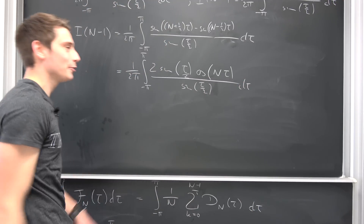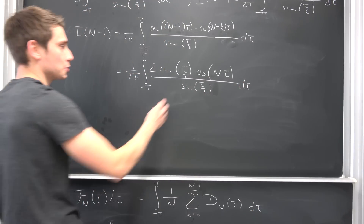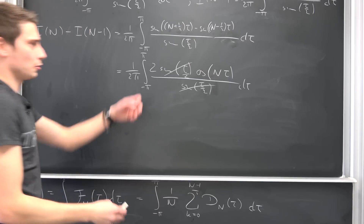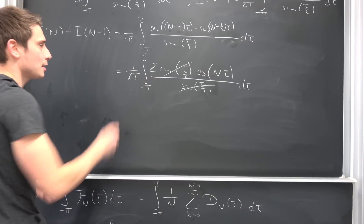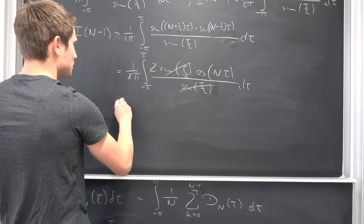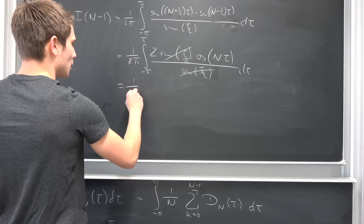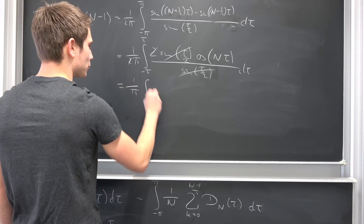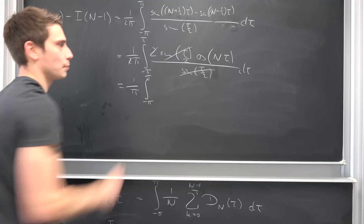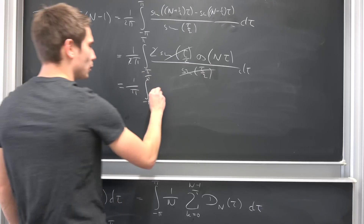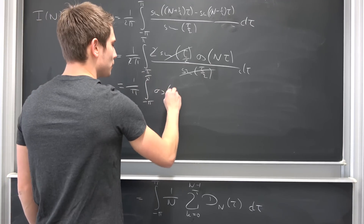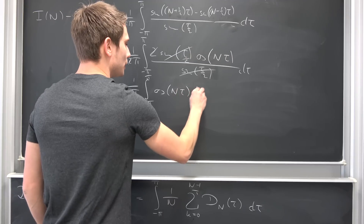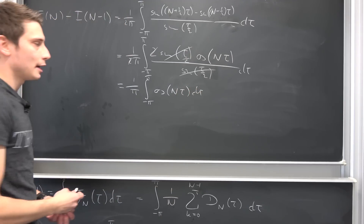And the really cool thing is, by this addition theorem, the sine of tau over 2 cancels out. We can bring the 2 to the outside, so this is just going to be 1 over pi times the integral from negative pi to pi of cosine of n times tau, integrated with respect to tau.